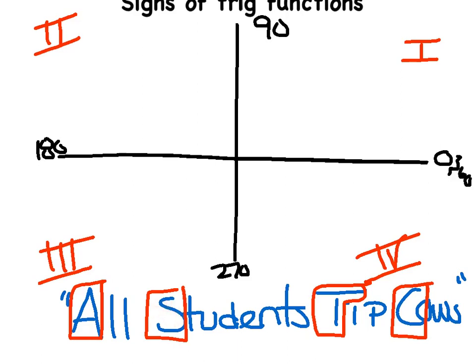S, T, and C remind you of trig: S is really for sine, T is for tangent, C is for cosine, and A is actually for all of them. Other goofy sayings people use are 'all students take calculus,' and like I said, you can make up your own to memorize these. Basically, this tells us what's positive in each trig quadrant.